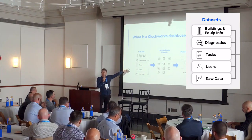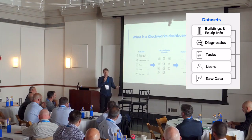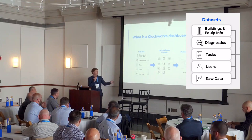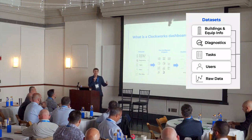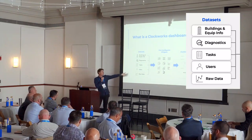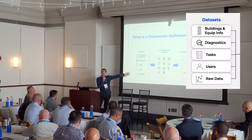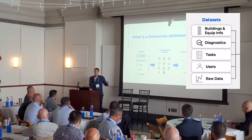We see people creating and completing tasks — probably the most important data set that we have in Clockworks. Who's working on what, what's the current status of a task — all of that data is available in the dashboard tool. We know how many users are participating in those tasks and can view information by user.